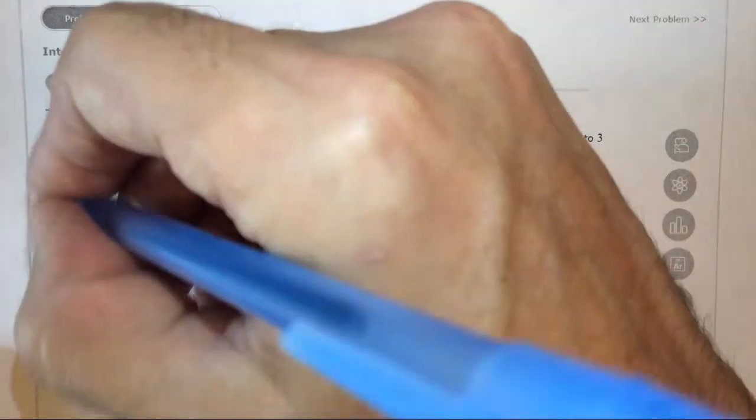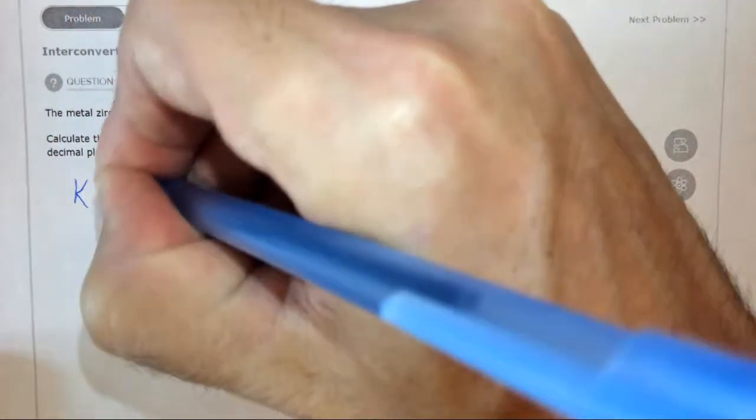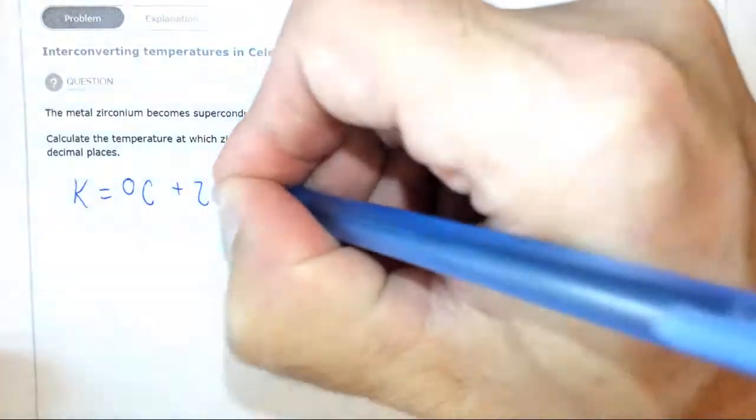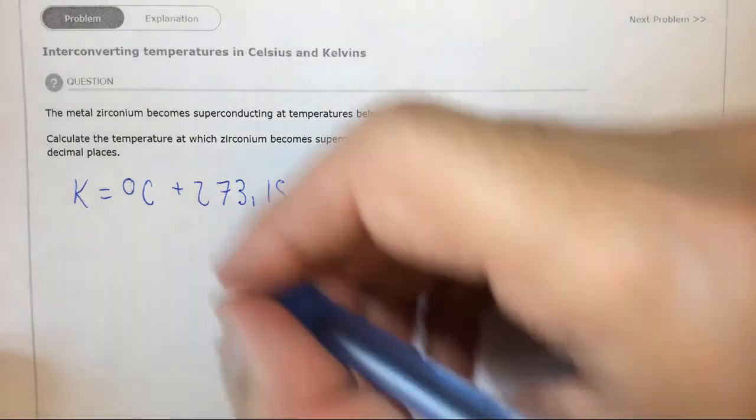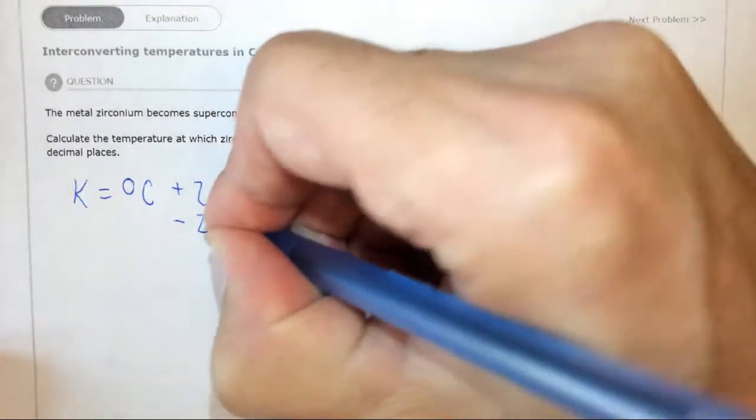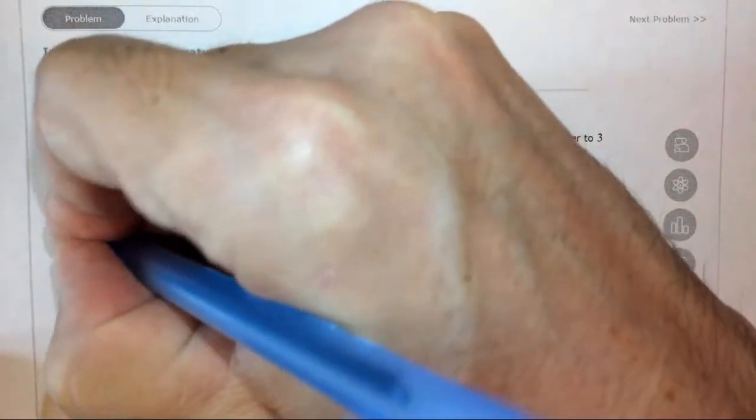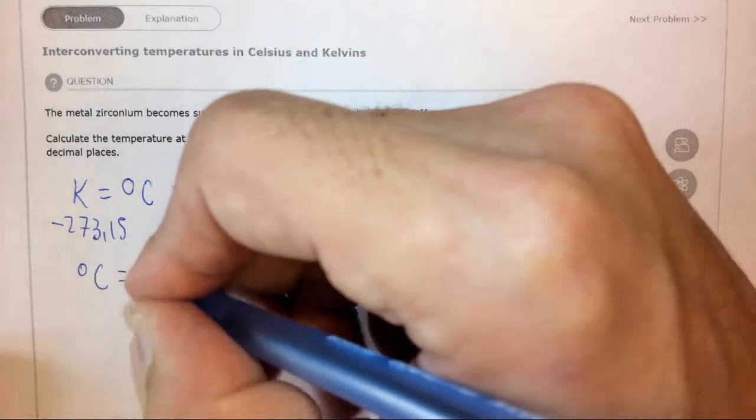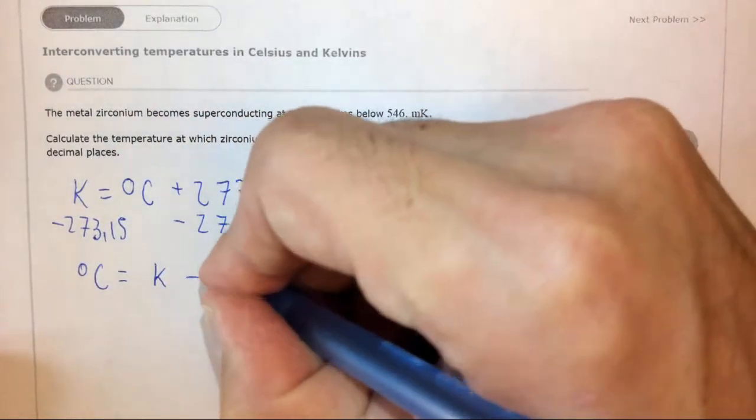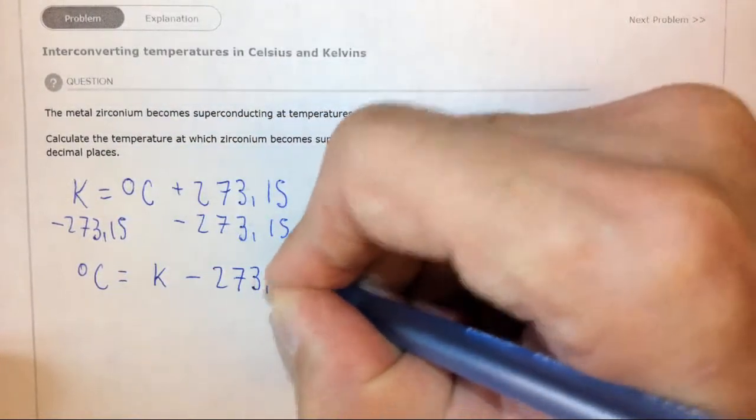You may recall that Kelvin equals degrees C plus 273.15. If we rearrange this equation by subtracting 273.15 from both sides, then we find that moving degrees C over to this side, degrees C equals K minus 273.15.